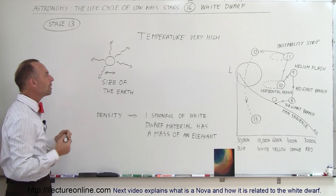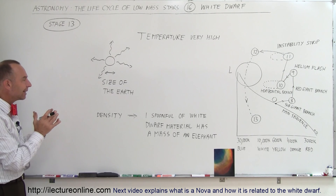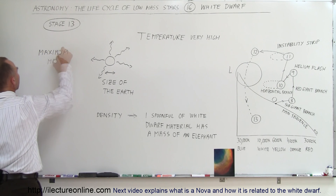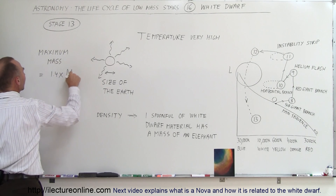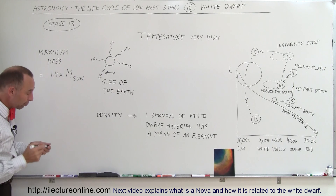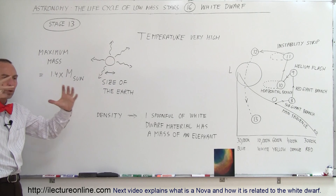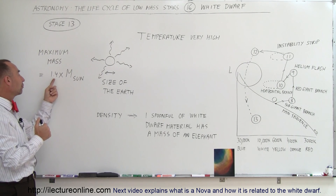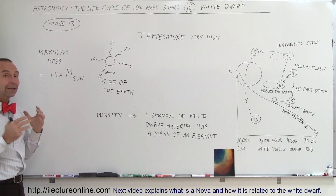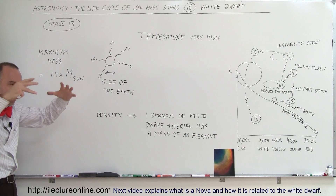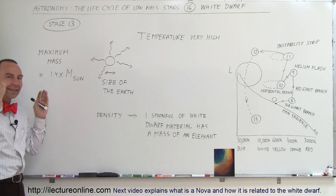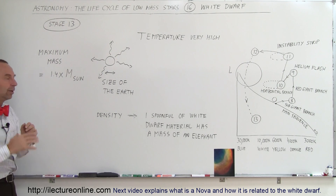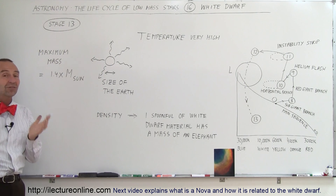How big can a white dwarf be? A very smart astronomer named Chandrasekhar has calculated that the maximum mass of a white dwarf is 1.4 times the mass of the sun. What happens when it's bigger than 1.4 solar masses? The balance between the gravitational forces compressing the core and the repulsive force of the electrons pushing back will be overcome by gravity, squeezing the white dwarf even tighter. So as long as the mass does not exceed 1.4 times the mass of the sun, that will not happen.